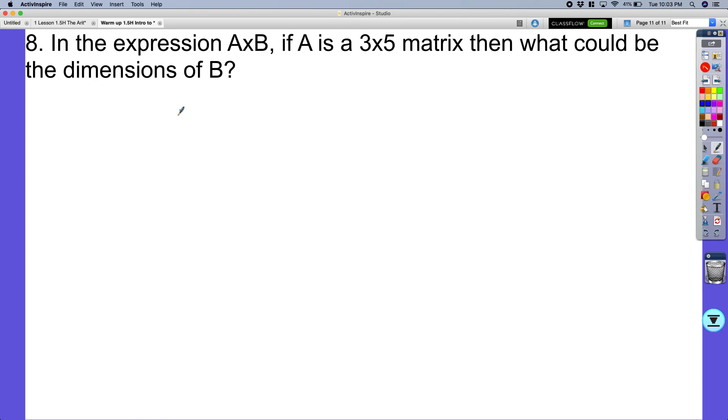So in the expression a times b, if a is 3 times 5, then what could be the dimension of b? So it's basically I have two of the values, and this first matrix is going to be 3 by 5. It says, give me an example where I could multiply this. Well, the only thing that really matters is this first row, or this blank value right here, needs to be a 5. The second value could be anything, so we'll put like a 2.